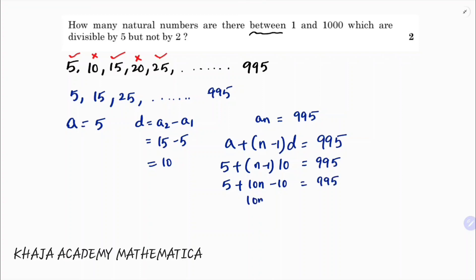So 10n minus 5 equals 995. Transpose plus 5, so 10n equals 1000.